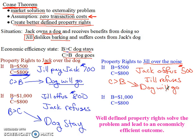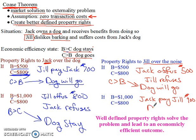And finally, what if Jack gets $1,000 of benefits from the dog and Jill is suffering $800 of costs, with Jill holding private property rights? Jill can say the dog has to go because of the barking. But Jack could offer her $900, and she would accept because it's higher than her $800 in damages. So Jack pays Jill $900, Jill accepts, and the dog stays. That's the efficient outcome — the benefits of the dog are greater than the costs, so the dog stays.